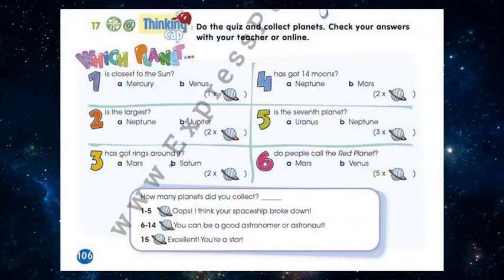Our next exercise is Exercise 17 on page 106. Do the quiz and collect planets. Check your answer with your teacher or online. You should answer these six questions. Which planet is closest to the Sun?